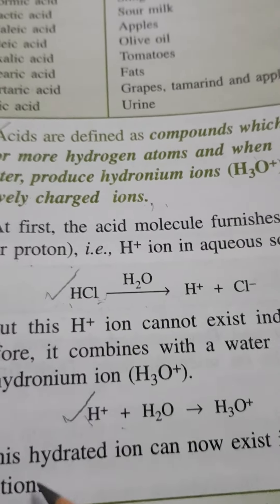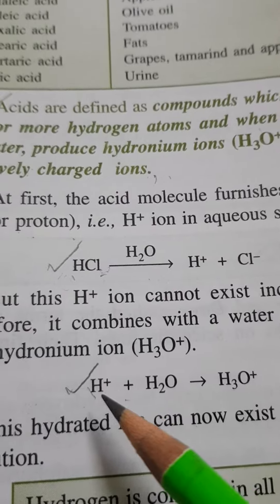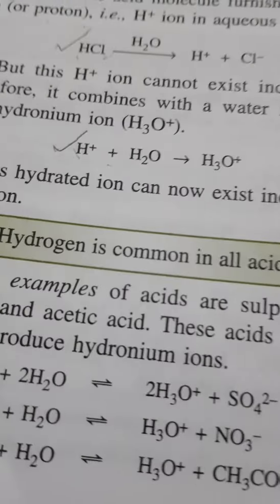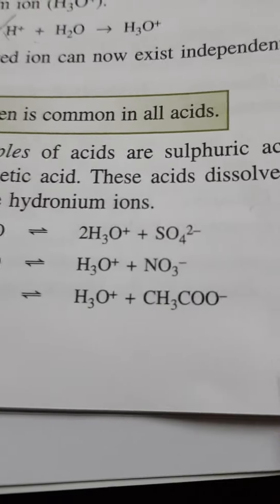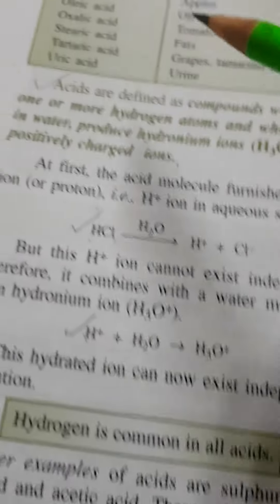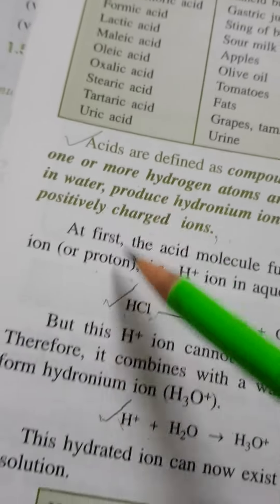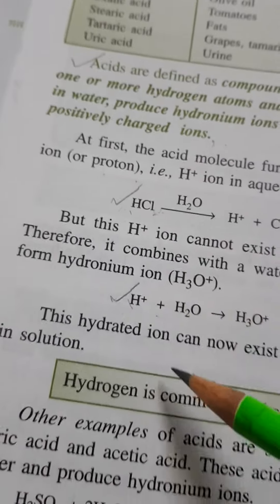Then you tick mark this reaction H+ plus H2O, I'll explain this also. Then these reactions you underline. So we are on page number 38. You mark the three things here: definition, then this reaction HCl, then H+ plus this and these three reactions.